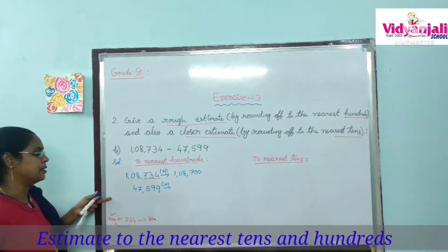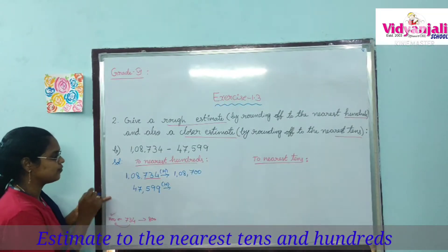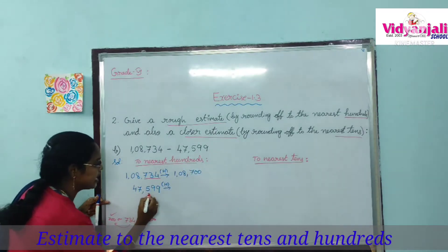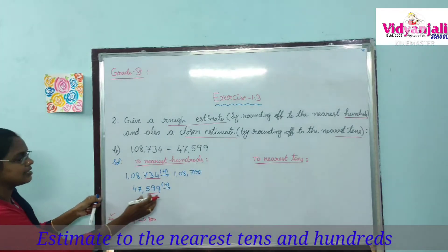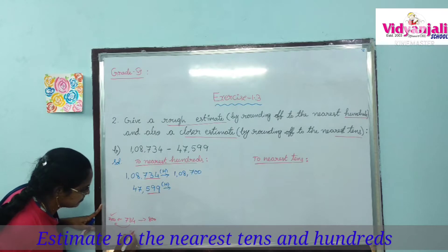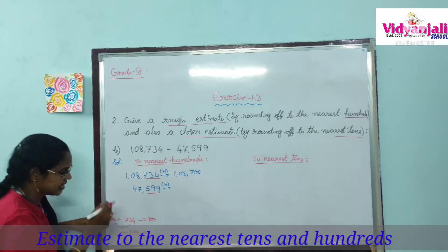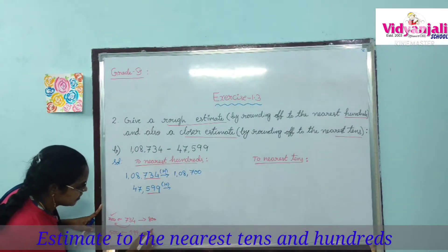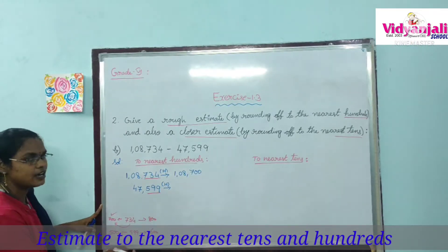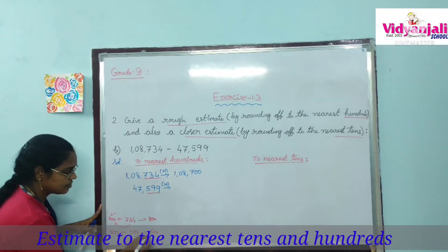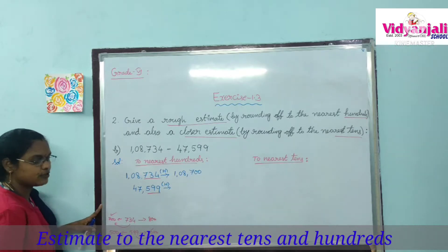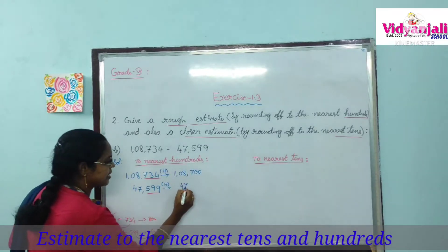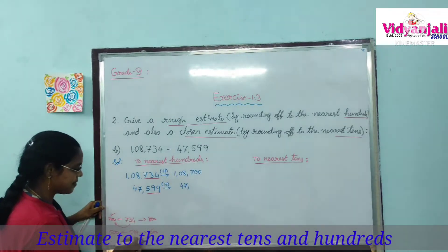Now check the second number 47,599. We have to round off to the hundreds. The hundreds part is 599. Now, 599 lies between 500 and 600. Is 599 nearer to 500 or 600? It is near to 600. So we replace 599 with 600. The 47,000 remains the same, giving us 47,600.